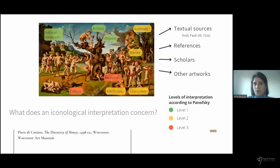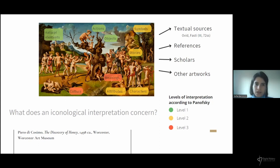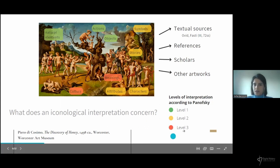Here I show an example of an iconological interpretation made by Panofsky in the book Studies in Iconology, about a painting by Piero di Cosimo representing the discovery of honey. Panofsky says that this artwork expresses the personality and personal ideas of the artist, since there are other artworks representing the theme of the early stages of humanity. Panofsky notices a positive connotation of the scenes represented when humans are still living in harmony with nature — this is the third-level meaning he identifies.